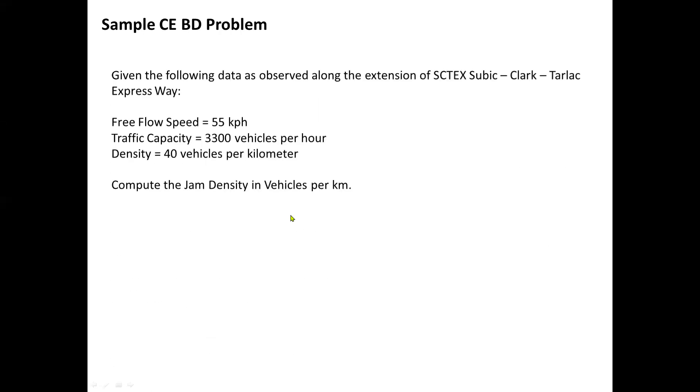And for problem number three, we have another CE board exam problem. Given the following data as observed along the extension of SCTEx Subic-Clark-Tarlac Expressway: the value for the free flow speed is 55 kilometers per hour, traffic capacity of 3,300 vehicles per hour, and a density of 40 vehicles per kilometer. So all we have to do is to compute for the jam density in vehicles per kilometer.